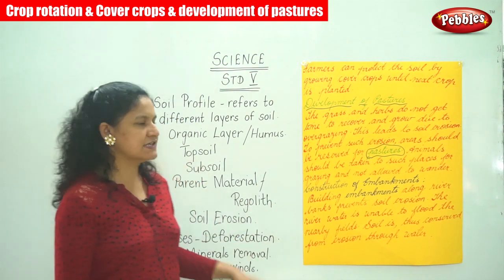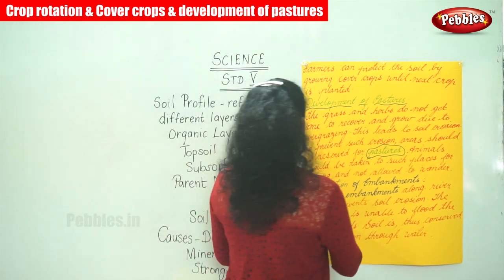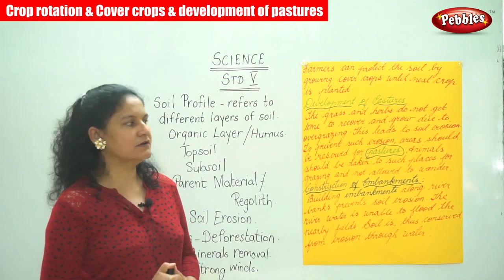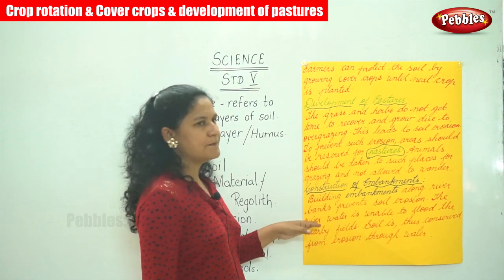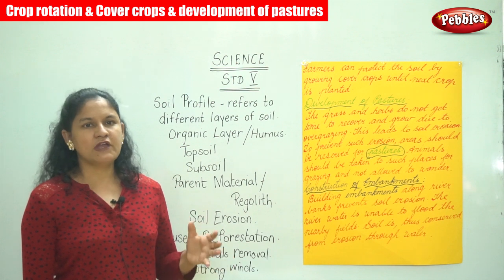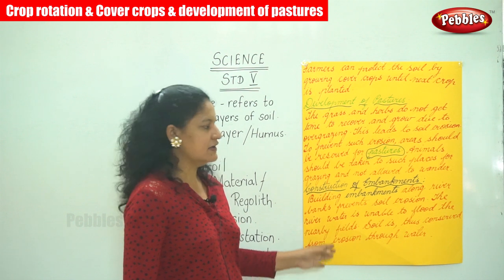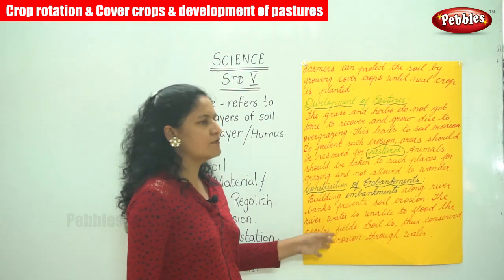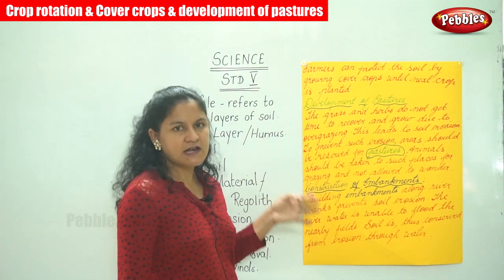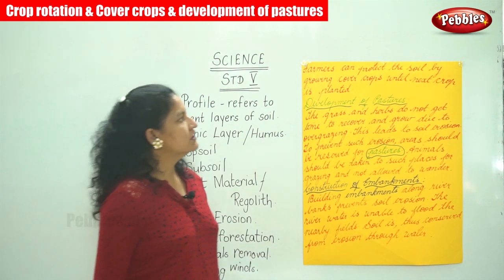The next method is construction of embankments. Building embankments along river banks prevents soil erosion. To prevent soil erosion along river banks, we need to build or construct embankments. The river water is unable to flood the nearby fields, and the soil is thus conserved from erosion through water.